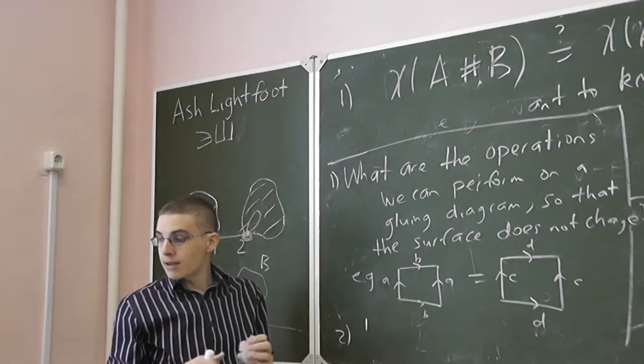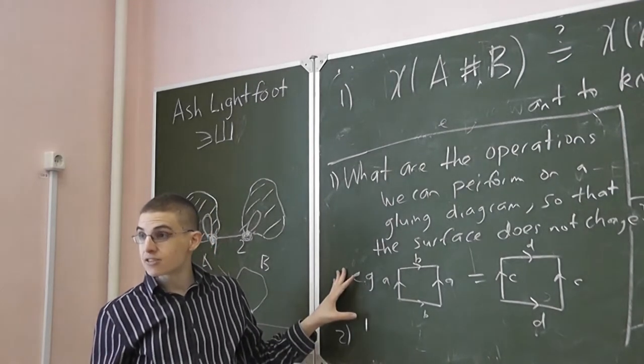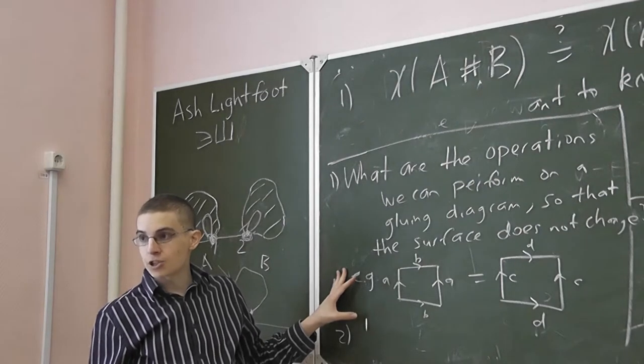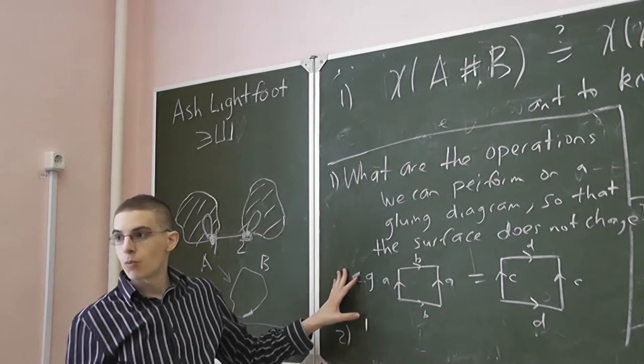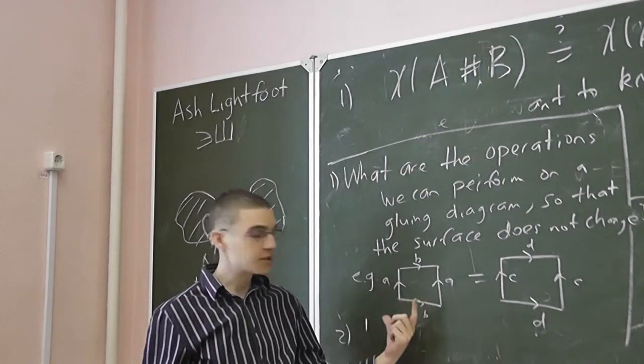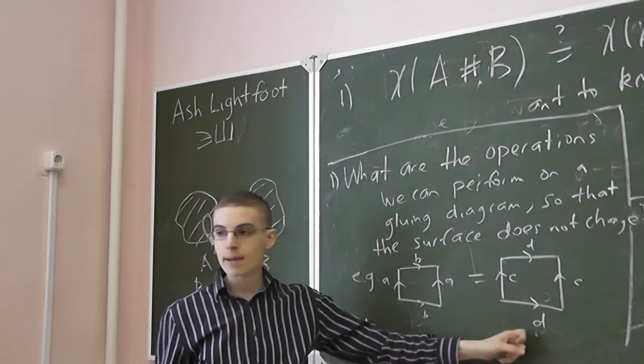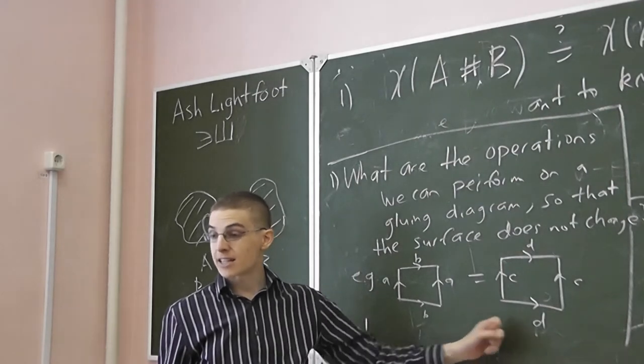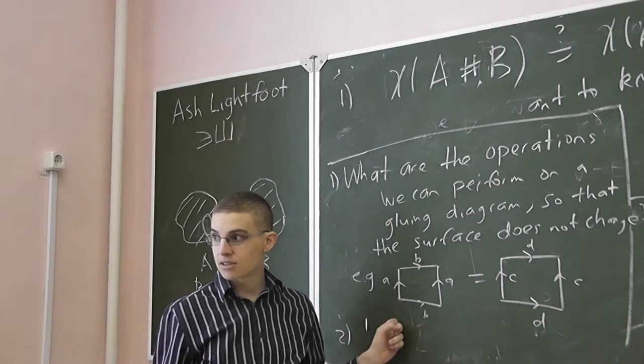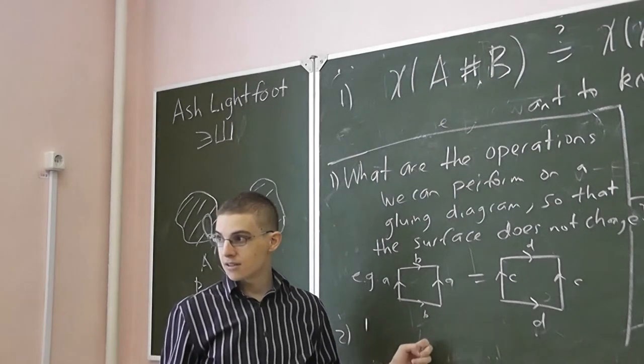So we want to show that the Euler characteristic doesn't depend on our choice of gluing diagram, so we need to show it doesn't change when we perform operations like this. For example, does the Euler characteristic change if I just relabel the edges? Does the number of faces change? Does the number of edges change? The number of vertices?